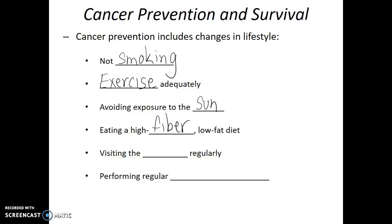The next two suggestions are things you should do to increase the likelihood of discovering cancer while it's still treatable. This includes visiting the doctor regularly and also performing regular self-examinations. Finding cancer in its early stages allows for a greater variety of treatment options, and those treatment options are typically far more successful than cancer which is only discovered at later stages. Now that we've talked about cancer, let's talk about a different type of cell division that has a very specific purpose — meiosis.